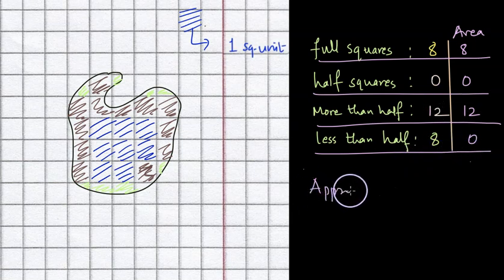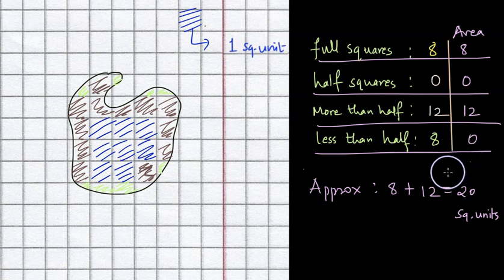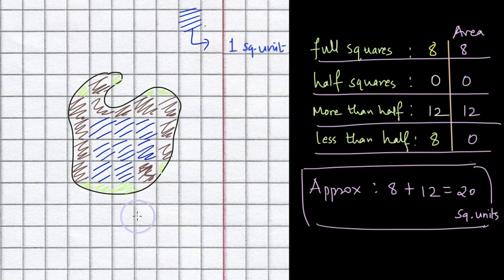So in this case, we can write that approximately the area is going to be eight full squares plus 12 full squares assumed for more than half squares, and that will be 20 square units. This works because we are ignoring the area contributed by less than half squares. And this is how we compute the area of any irregular shape using the grid.